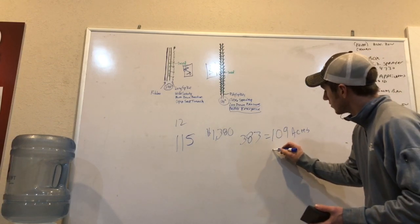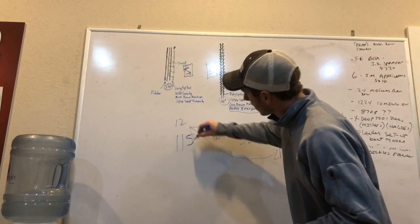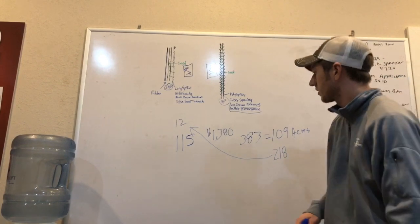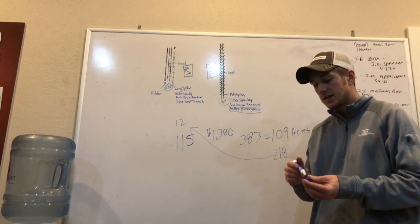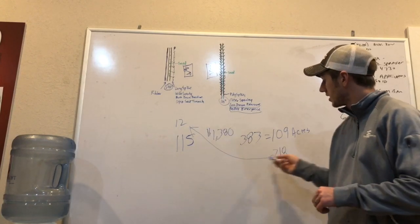So, we got to double that. 218 acres on a 12-row planter to double your money on the Yetter Poly Spike closing wheels. I would imagine most of my growers that have a 12-row planter are going to cover 218 acres. And the return on investment on these Yetter Poly Spike closing wheels is that simple.